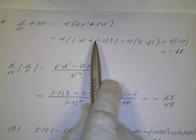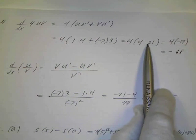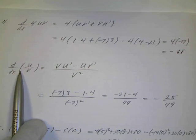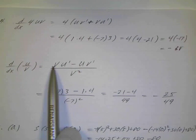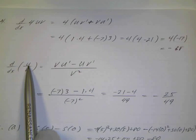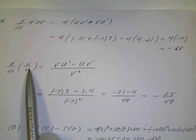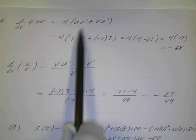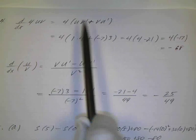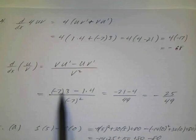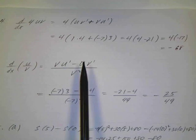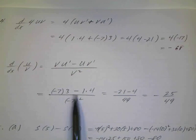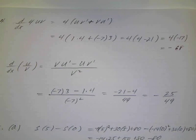We simplify: 4 times (4 plus negative 21) equals 4 times negative 17, which is negative 68. For the quotient rule part: low d high minus high d low over denominator squared — that's v u prime minus u v prime over v squared. So negative 7 times 3 minus 1 times 4, all over negative 7 squared: negative 21 minus 4 is negative 25, all over 49.